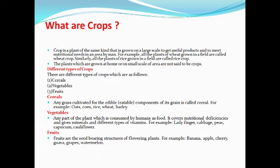There are different types of crops. Farmers usually grow cereals, vegetables, and fruits. Cereals are any grass cultivated for the edible components of its grain. For example, plants like corn, wheat, and barley have a grass-like structure — they don't have large branches or multiple branches. They have a single grass-like structure and at the tip, seeds or grains grow, which are the grains we use. These types of crops are called cereals.